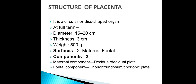Now if we see the structure of the placenta, it is a circular or disc-shaped organ in human beings. At full term, its diameter is around 15 to 20 cm, thickness is 3 cm, and its weight is around 500 grams.